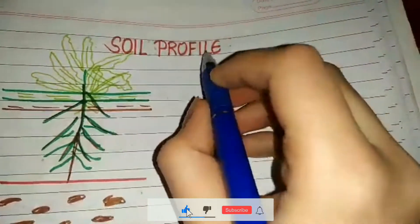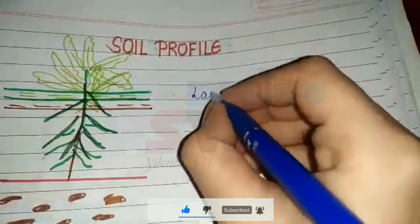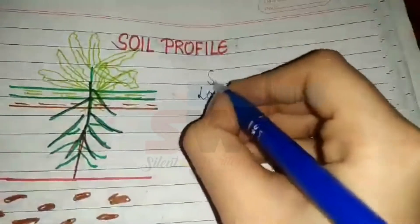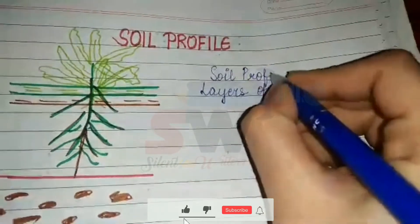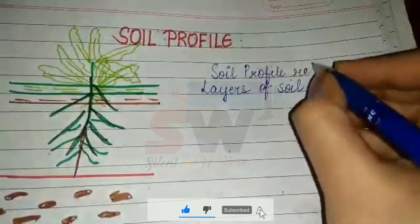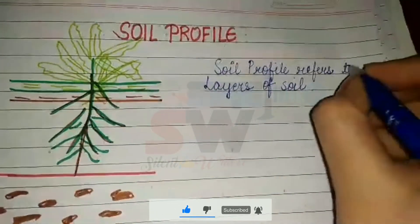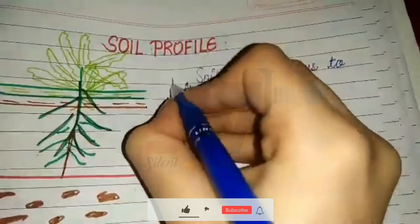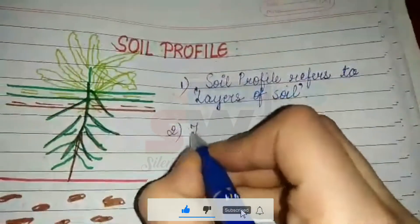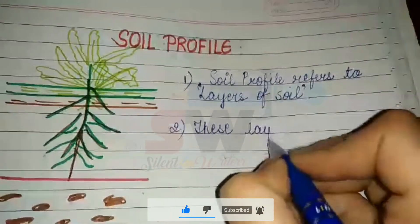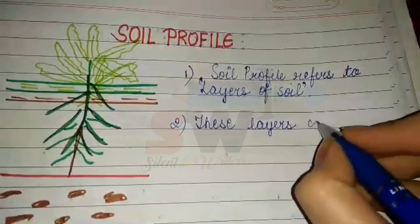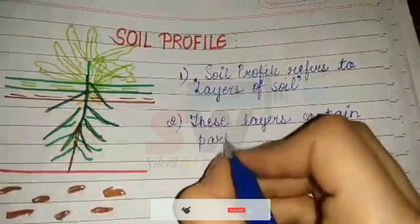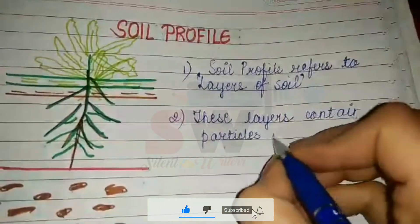Soil profile means layers of soil. It refers to layers of soil that contain particles of different size.